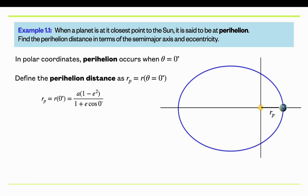So all we have to do is plug in theta equals zero into our formula to get the result. Cosine of theta is just one. So we get a times one minus e squared over just one plus e. We can simplify this fraction by expanding the top. One minus e squared is just one minus e times one plus e. The one plus e's cancel out. And we get a very simple result that the perihelion distance is the semi-major axis times one minus the eccentricity.